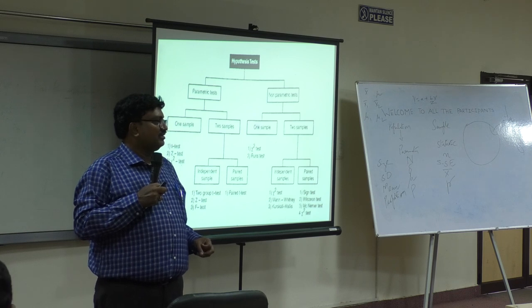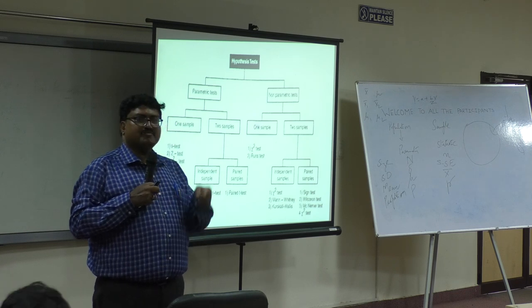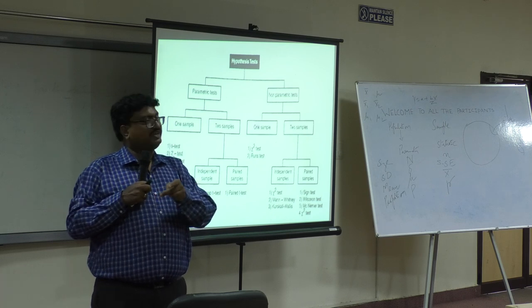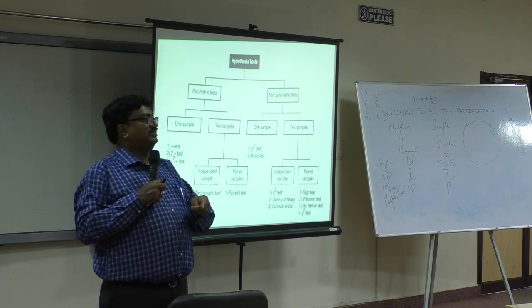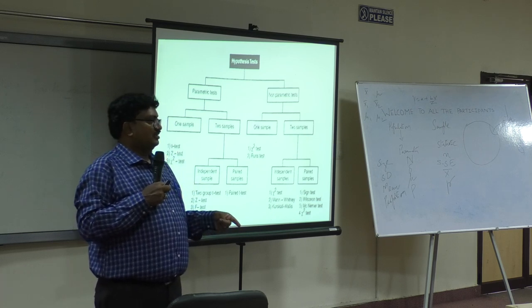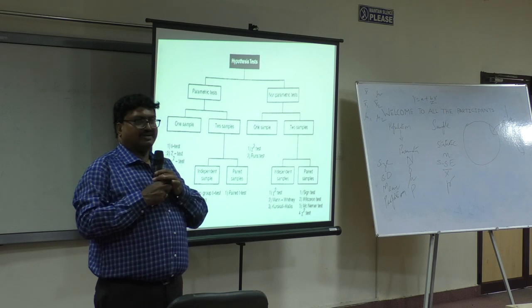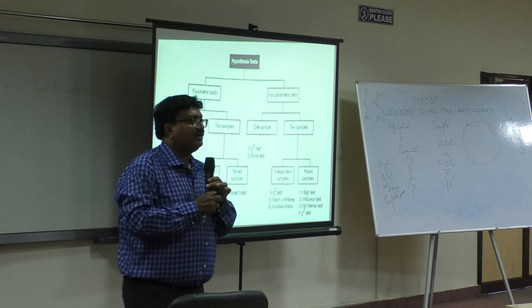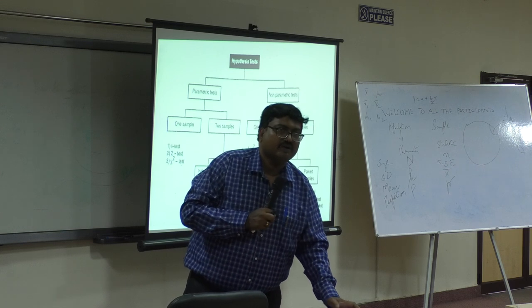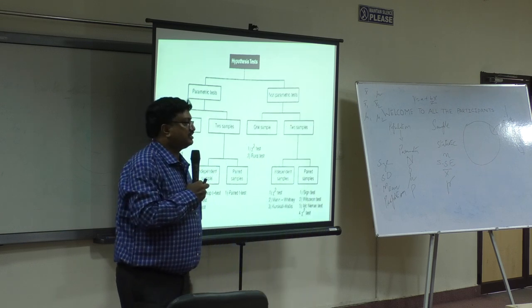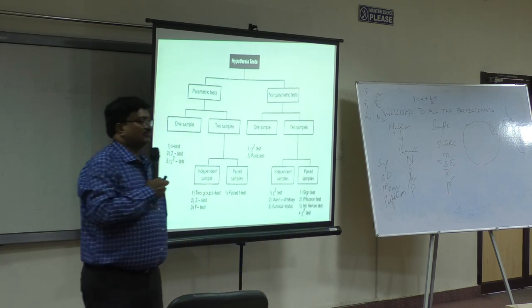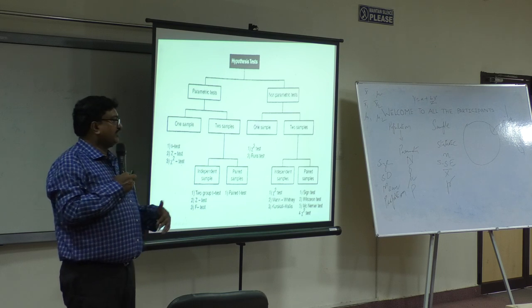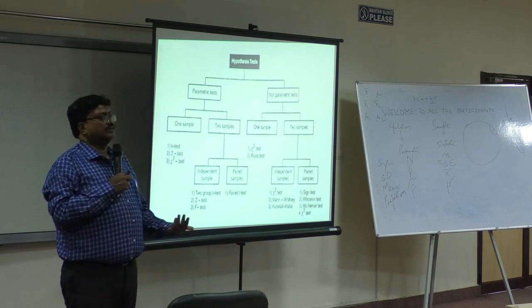Did you get what I am saying? So on the same sample, if I collect data twice, I call it a dependent t-test. But if I collect data from him and data from somebody else, it is called an independent t-test. Is that clear? What is dependent? On the same sample, if you collect twice.